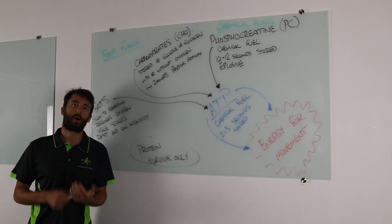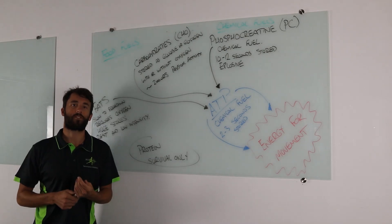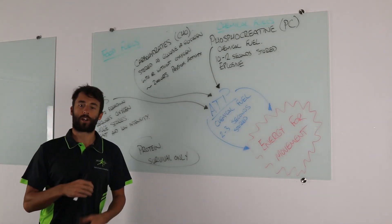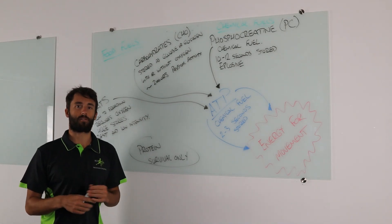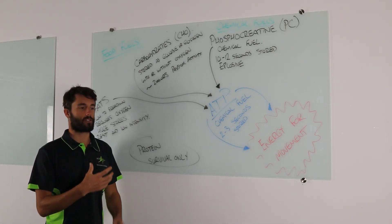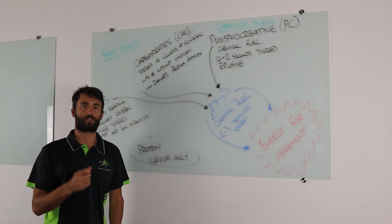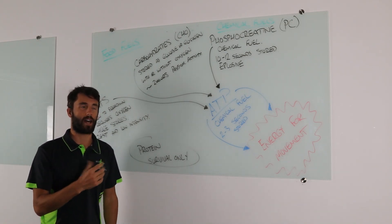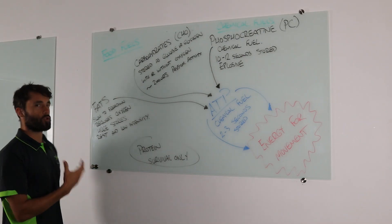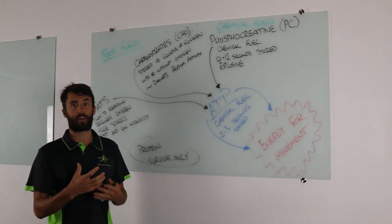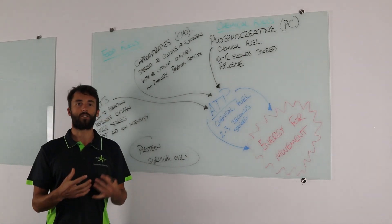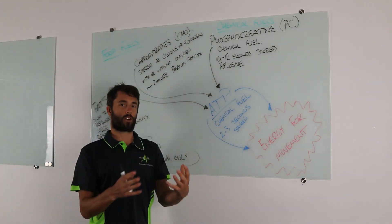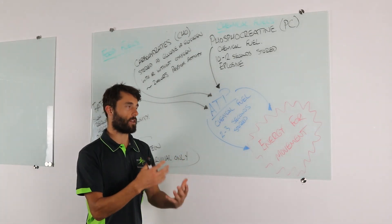G'day guys, Tyler from METS here. Welcome back as we continue to go through the key knowledge from Unit 3 Area of Study 2. We're not going to get into any analysis type stuff today, we're going to stick to the key knowledge. We'll get into some more in-depth application questions in a couple of weeks once we've got this nuts and bolts stuff down pat. Today we're going to be looking at fuels and fuels for resynthesis of ATP — the fuels we can use to get energy for movement.